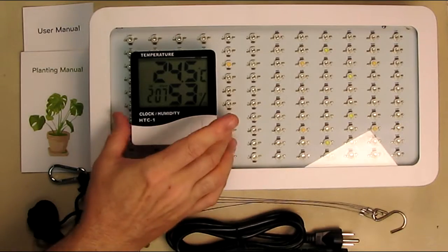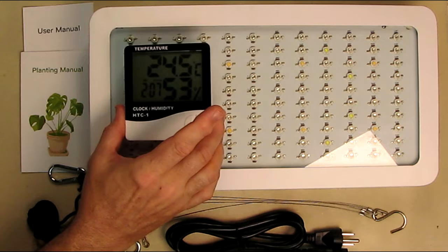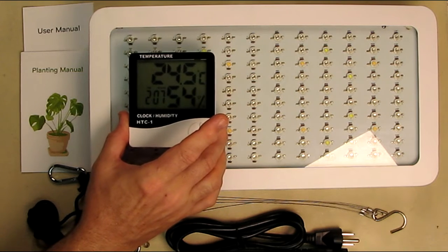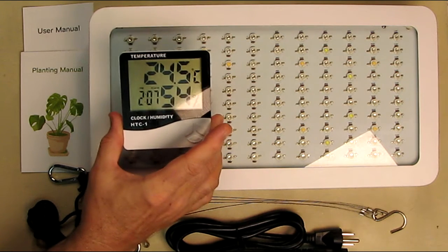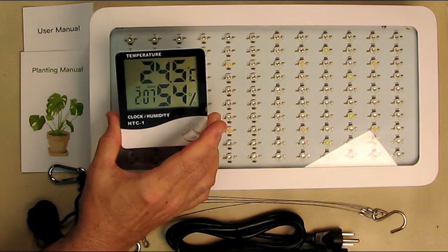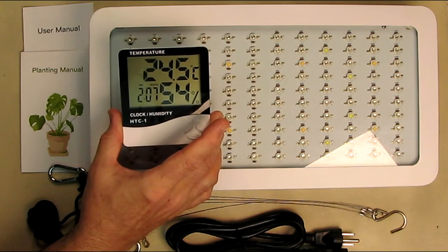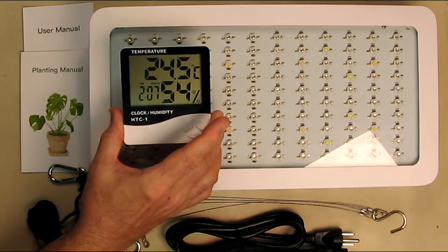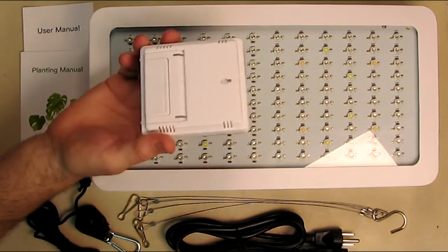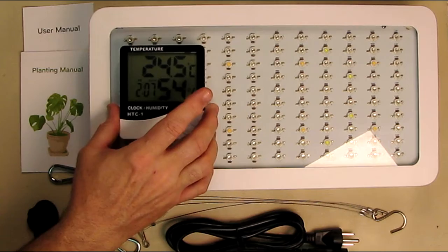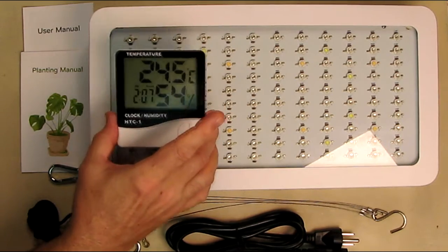This unit also comes with an included temperature and humidity monitor with a clock and alarm. It takes a AAA battery and it's very simple to use. It'll give you the temperature in centigrade and percent of moisture and has a nice little stand on the back of it. This allows you to monitor what's going on with your plants.